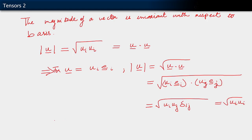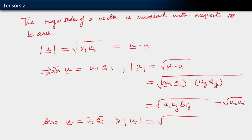Another way of writing this is to write u as u-bar_i e-bar_i. Going through the same steps, one will see that the magnitude of u will also turn out to be written as the square root of u-bar_i u-bar_i. So the magnitude has the same formula independent of the basis of representation, and this is what we consider to be an invariant of a vector.